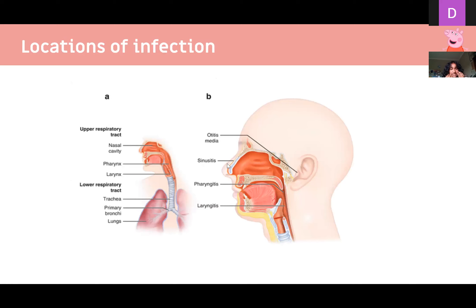Infection can occur in the sinuses, which are spaces in the facial bones connected to the nasal cavity — when infected or inflamed, this is called sinusitis. It can spread through the eustachian tube to the middle ear, called otitis media, or to the external ear, called otitis externa. Infection of the pharynx is pharyngitis, the larynx is laryngitis, and the epiglottis — which closes the airway during swallowing — when infected is called epiglottitis.